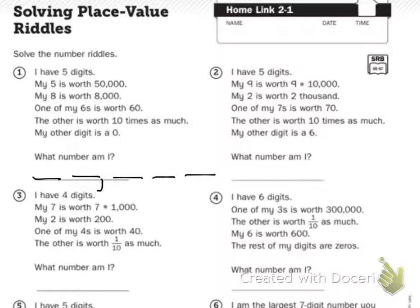Put my comma in. My five is worth 50,000. So I'm going to count ones, tens, hundreds, thousands, ten thousands. I'm going to put my five right there. My eight is worth 8,000.